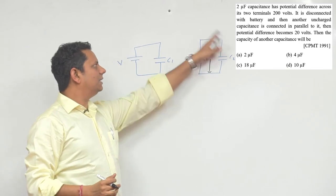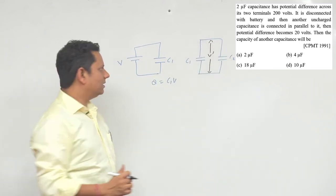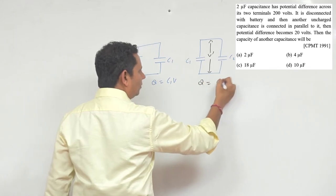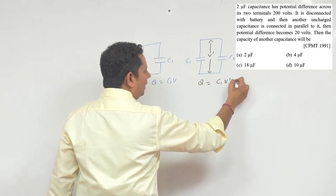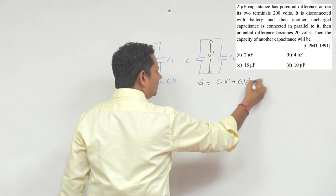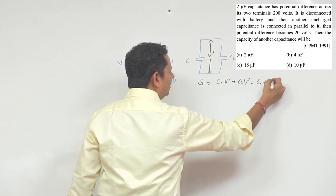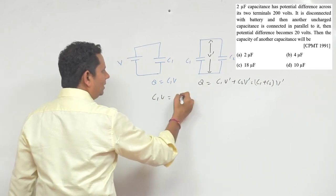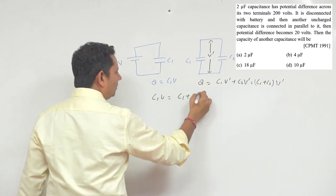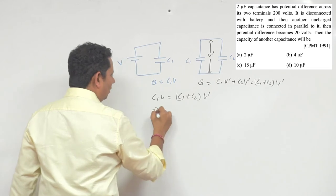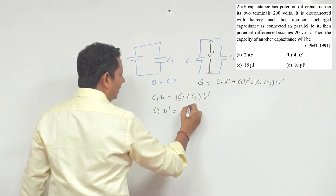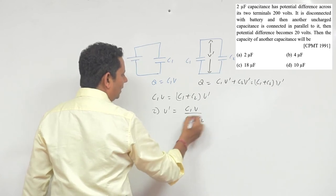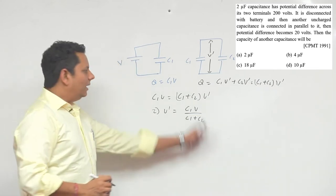The charge will flow from here to there but the charge will be conserved. So we can write that Q will be equal to C1 V dash plus C2 V dash, which equals C1 plus C2 times V dash. Since both are equal, we can write C1 V equals C1 plus C2 times V dash, which implies V dash equals C1 V divided by C1 plus C2. This is the value of V in this case.